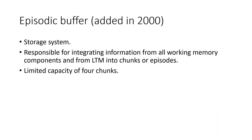The episodic buffer is more recent than the 1974 model, having been added in 2000. It is a storage system responsible for integrating information from all working memory components and from long-term memory into chunks or episodes. It has a limited capacity of four chunks.